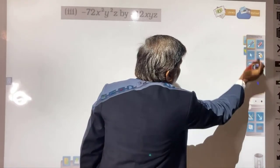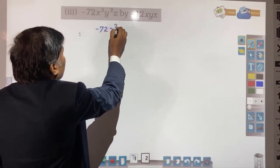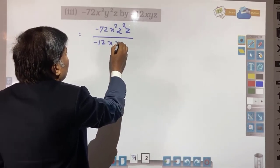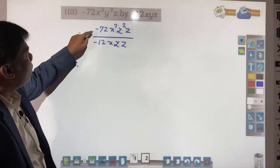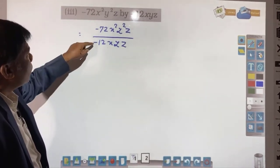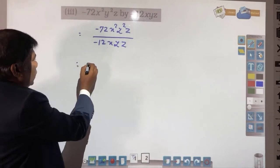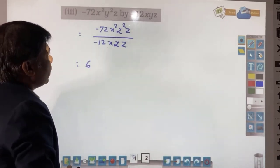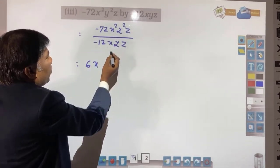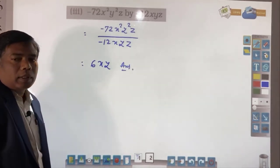Question 3: (−72x²y²z) divided by (−12xyz). First, both signs are negative so the result is positive. Constant: 72 ÷ 12 = 6. Then x² ÷ x = x, y² ÷ y = y, and z ÷ z cancels. So the answer is 6xy.